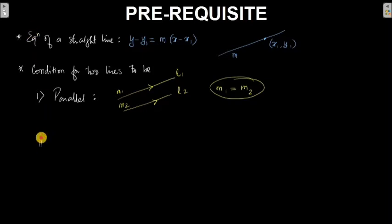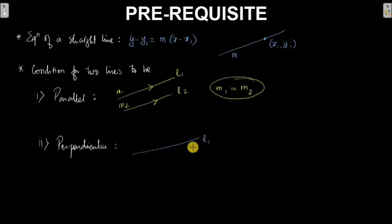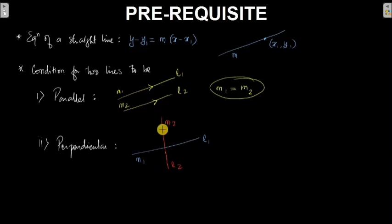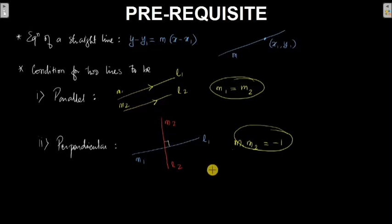Another condition is for two lines to be perpendicular. Say line l₁ has slope m₁ and line l₂ has slope m₂. If l₁ and l₂ have to be perpendicular, then the product of m₁ and m₂ must equal minus 1. If this holds, then the lines are perpendicular to each other.